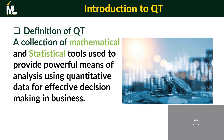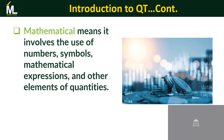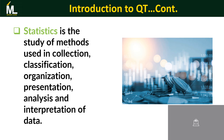If you need to run your business properly, you need to gather information that helps you analyze your business performance. This information is usually in terms of quantitative data. Mathematical means involves the use of numbers, symbols, mathematical expressions, and other elements of quantities. Statistical means is the study of methods used in collection, classification, organization, presentation, analysis, and interpretation of data.